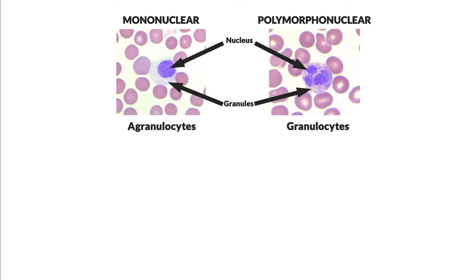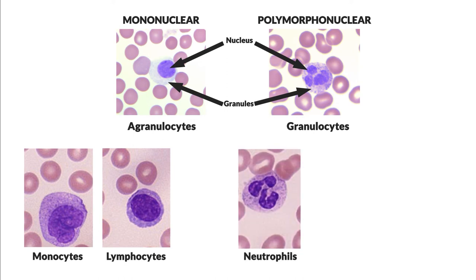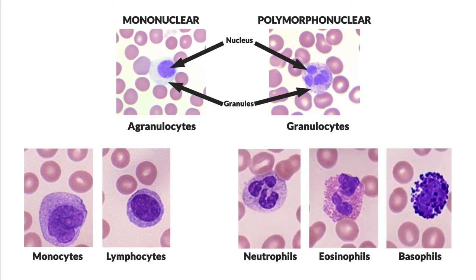Taking these characteristics into account, within the leukocytes classified as mononuclear and agranulocytes, we would find two types: lymphocytes and monocytes. While within leukocytes classified as polymorphonuclear and granulocytes, we would find three types: neutrophils, eosinophils, and basophils, depending on the affinity of the cytoplasmic granulation for the dyes used.